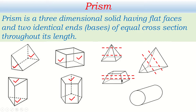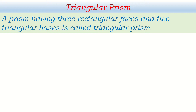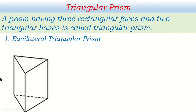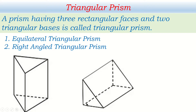Remember: a prism is a three-dimensional solid with flat faces, two identical bases, and equal cross-section throughout its length. In physics labs, the triangular prism is very common and is used for total internal reflection in various instruments. A triangular prism has three rectangular faces and two triangular bases. Two types are commonly used: the equilateral triangular prism, where all sides of the triangle are equal, and the right-angle triangular prism, where one angle is 90 degrees.